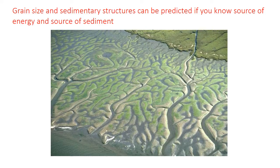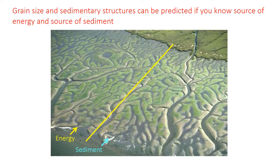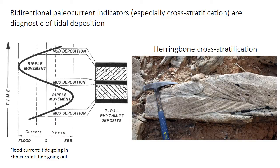You can predict a lot about the grain size and sedimentary structure just from knowing the energy and the sediment source in any environment. Tidal flats are unusual in that energy and sediment are both supplied from the ocean side of the system. Looking at a transect from the ocean to the land side of the tidal flat, energy and sediment will decrease as you move towards the land. Because tidal currents rise and fall, the presence of bi-directional paleocurrent indicators, especially cross stratification, is highly diagnostic of tidal deposition.